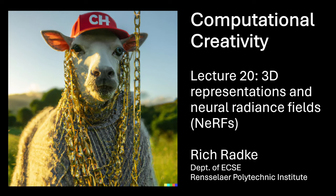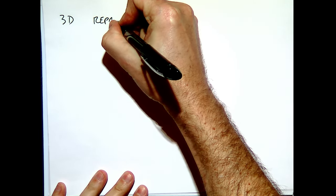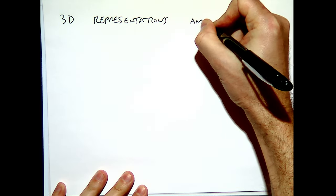Today's lecture is about 3D modeling. The reason we need to cover this first is to talk about generative models for 3D. In order to do that, we have to understand how we even represent a 3D object. We'll talk about some of the standard ways, and then we'll talk about the exciting new technology called NERFs — neural radiance fields. Today's lecture is basically 3D representations and NERF.